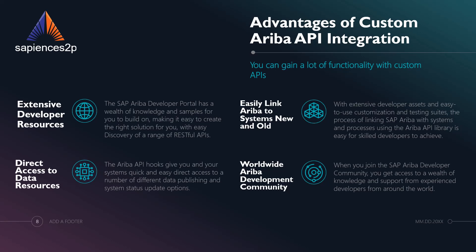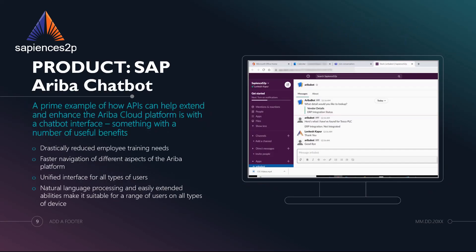A prime example of how APIs can extend and enhance the Ariba Cloud Platform is with a chatbot interface. Chatbots offer reduced training requirements, intuitive access to information and processes, and are easily extended to offer different types of worker the access they need, all from one unified interface. Sapience S2P's chatbot can give you all of this and more. Let's take a look at some of the features.